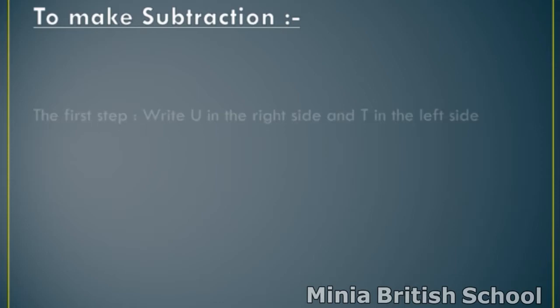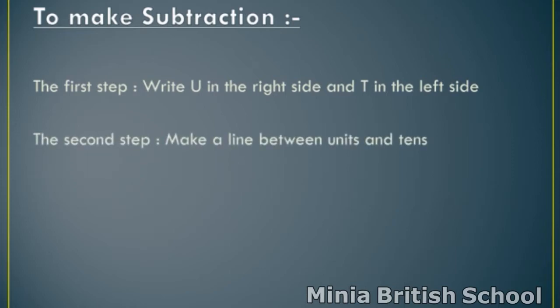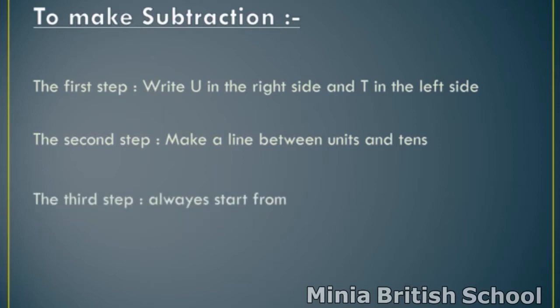The first step: write U on the right side and T on the left side. Write U for units and T for tens. The second step: make a line between units and tens. The third step: always start from units.